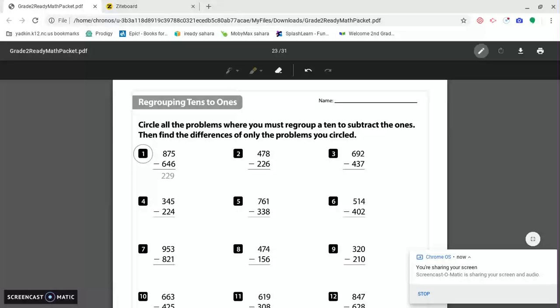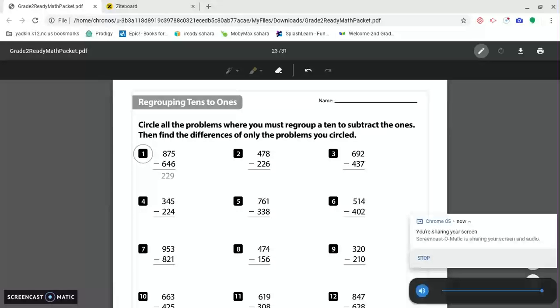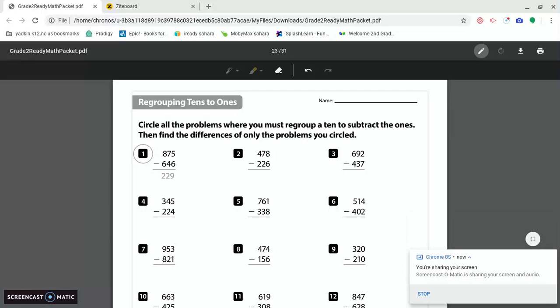So we're going to talk about some strategies for three-digit subtraction this morning. Page 23 says circle all the problems where you must regroup a ten to subtract the ones. Then find the differences of only the problems you circled. Like always, you can solve every problem if you wish, but I'm going to show you why we're circling certain problems.